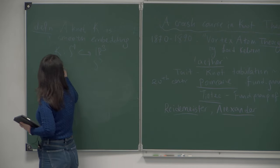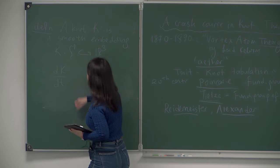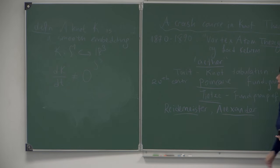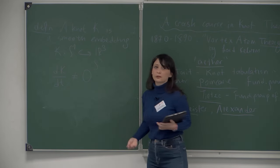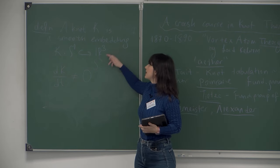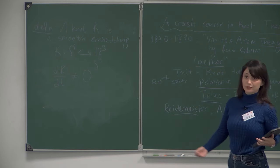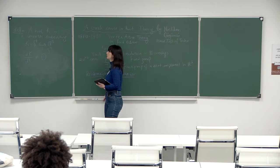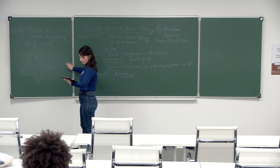We want our smooth embeddings to be non-singular, so that our function k is differentiable and at any point there is a tangent vector that never vanishes. We work with non-singular closed curves in three-dimensional space. In the classical case we work with R³ or S³, but you can generalize to other three-dimensional manifolds like thickened surfaces or non-orientable surfaces.